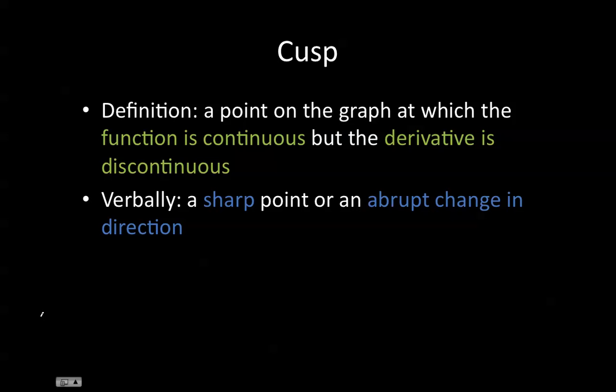A cusp is defined as a point on the graph at which the function is continuous but the derivative is discontinuous. The verbal definition is a sharp point or an abrupt change in direction.